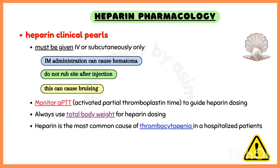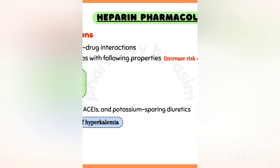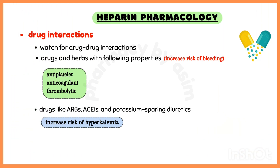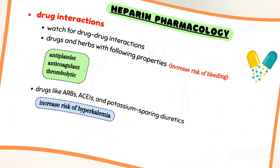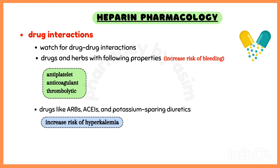Heparin is the most common cause of thrombocytopenia in hospitalized patients. Watch for drug-drug interactions: drugs and herbs with antiplatelet, anticoagulant, or thrombolytic properties can increase the risk of bleeding. Drugs like ARBs, ACE inhibitors, and potassium-sparing diuretics can increase the risk of hyperkalemia.